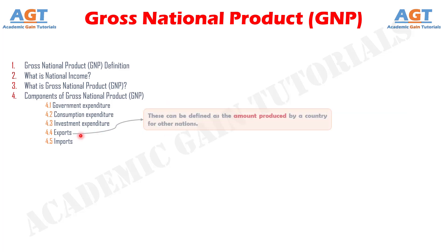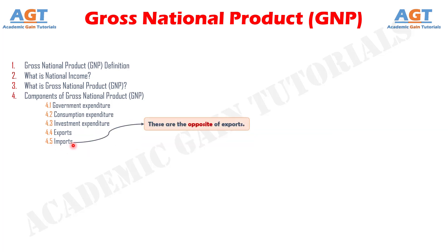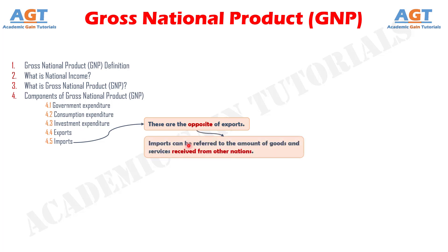Number four, exports. These can be defined as the amount produced by a country for other nations. Exports include goods and services. And component number five, imports. Imports are the opposite of exports and can be referred to as the amount of goods and services received from other nations.